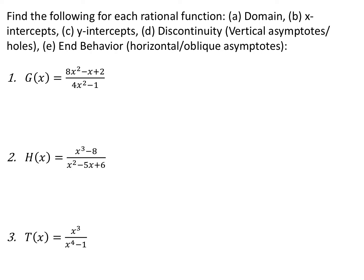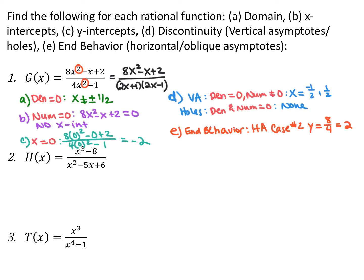For these three functions, we're going to find the domain, x-intercepts, y-intercepts, any discontinuities (vertical asymptotes or holes), and any end behavior (oblique or horizontal asymptote). A rational function can only have one horizontal asymptote or one oblique asymptote. For g(x), I start by factoring completely. The numerator x squared minus x plus 2 is prime and does not factor. The denominator factors into (2x plus 1)(2x minus 1), the difference of squares.